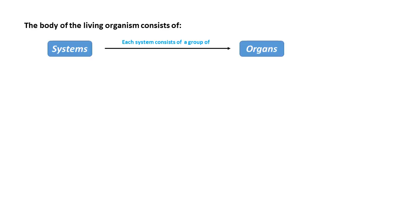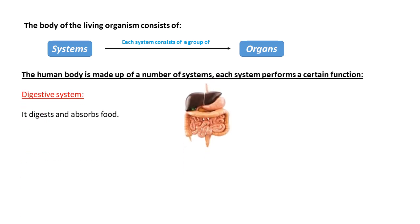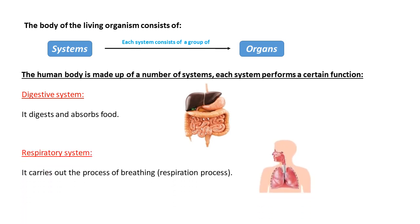The body of the living organism consists of systems, and each system consists of a group of organs. The human body is made up of a number of systems, and each system performs a certain function. Starting with the digestive system — they digest and absorb food.